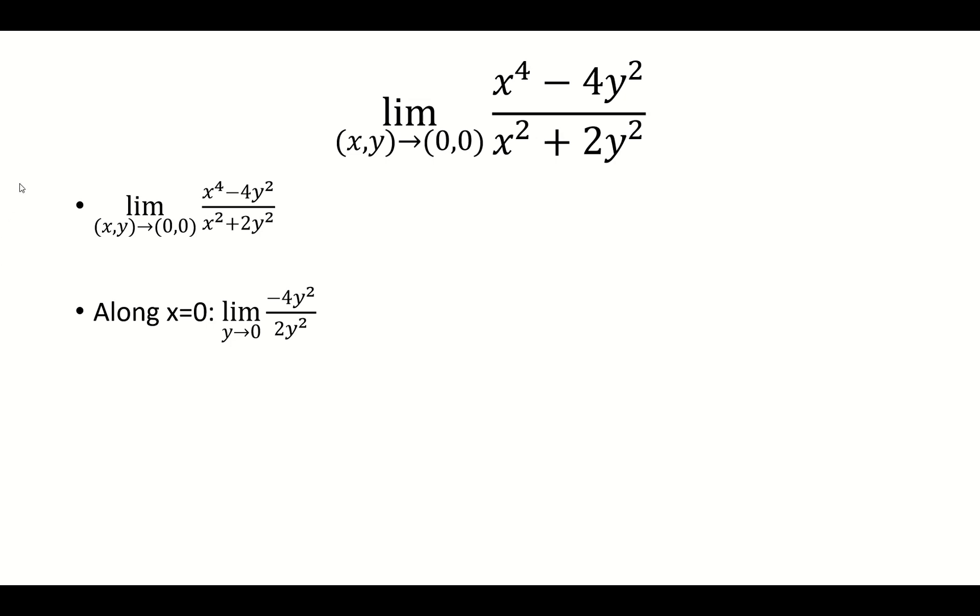and we're left with negative 4y squared over 2y squared, and then now it's just a limit with y approaching 0, because x is gone. Negative 4y squared over 2y squared gives us negative 2, and that's going to be the limit.